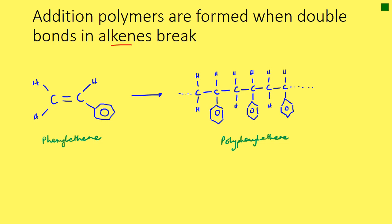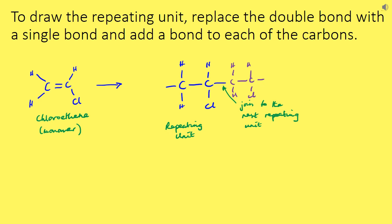Hopefully you've got some practice there breaking that double bond, opening it up and joining a few monomers together in that way, because you might well be asked to do that in an exam. Let's have another go with a different example — we're just going to highlight it by replacing the double bond with a single bond and adding a bond to each of the carbons. Let's use the example of chloroethene.